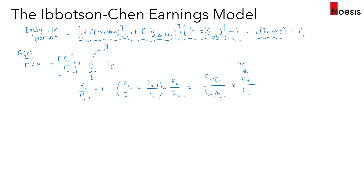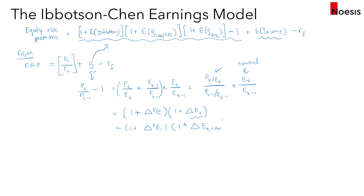Bear in mind that this is in nominal terms. When we calculate the ratio of a variable over the previous period, we can express this as 1 plus the change — the change in the PE ratio, or the growth in the PE ratio — for the first fraction, and 1 plus the change in earnings for the second. Since this is in nominal terms, we split it further: 1 plus the change in the PE ratio, multiplied by 1 plus the change in real earnings, multiplied by 1 plus the change in the inflation rate. That's how we link back to the three terms: the inflation rate, the growth in real EPS, and the growth in the PE ratio.